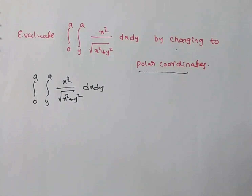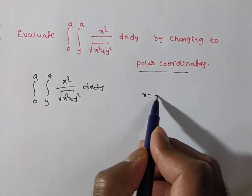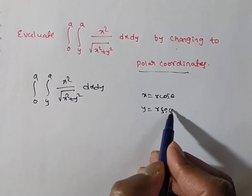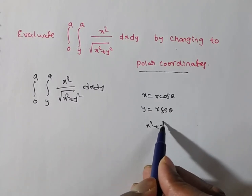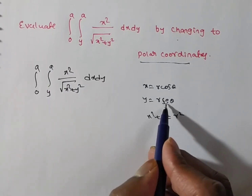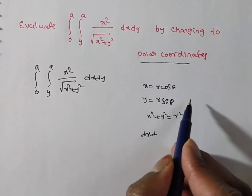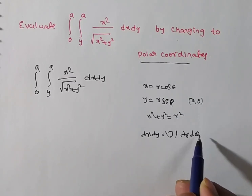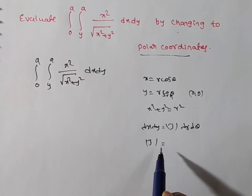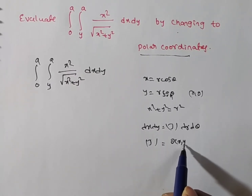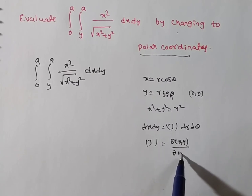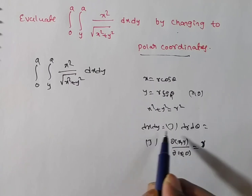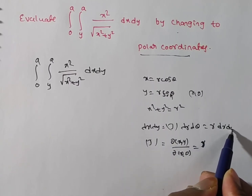To change into polar coordinates, in place of x we substitute r cos θ, in place of y we substitute r sin θ. In this case, x squared plus y squared equals r squared. We also change the limits to r and θ, and dx dy becomes the Jacobian times dr dθ. The Jacobian of the transformation from x, y variables to r, θ variables equals r. So dx dy becomes r dr dθ.